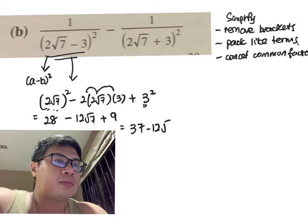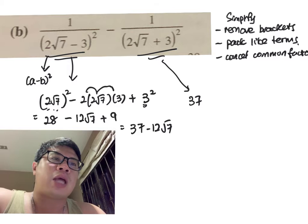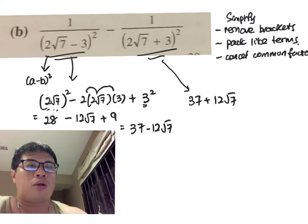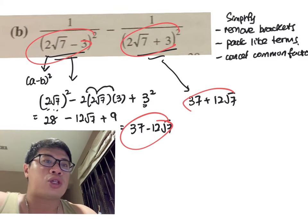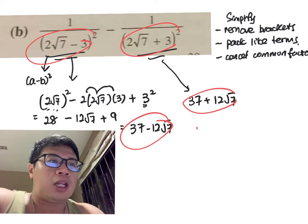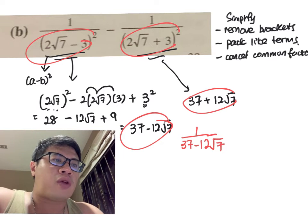If I employ the same idea, the conjugate is 37 + 12√7. So all in all, this portion here is actually this, this portion here is actually this. I'm trying to tell you it's not as difficult as you think. I've taken away the fraction and brackets for you. This is your first fraction, this is your second fraction.